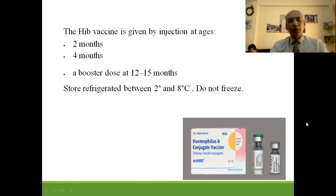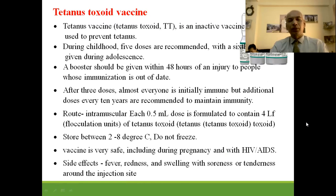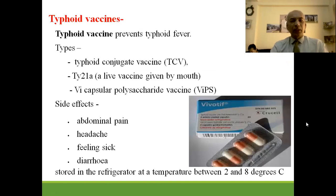Do not freeze the Hib vaccine. Tetanus toxoid is given to protect against tetanus — 5 doses are recommended, with a dose during adolescence. Booster should be given within 48 hours of injury for unimmunized persons or those whose immunization is not up to date. 3 doses are given initially, intramuscular 0.5 ml. Stored at 2 to 8 degrees centigrade. Very safe during pregnancy and in HIV patients. Few side effects: fever, redness, and swelling at the injection site.